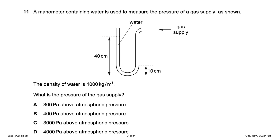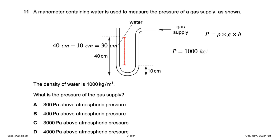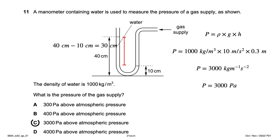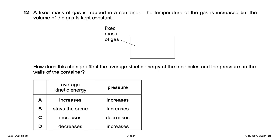A manometer containing water (density 1000 kg/m³) measures the pressure of a gas supply. The water has risen 30 cm (40 − 10 = 30 cm). Using P = ρgh: 1000 × 10 × 0.3 = 3000 Pa. Converting to SI units gives 3000 pascals, option C.